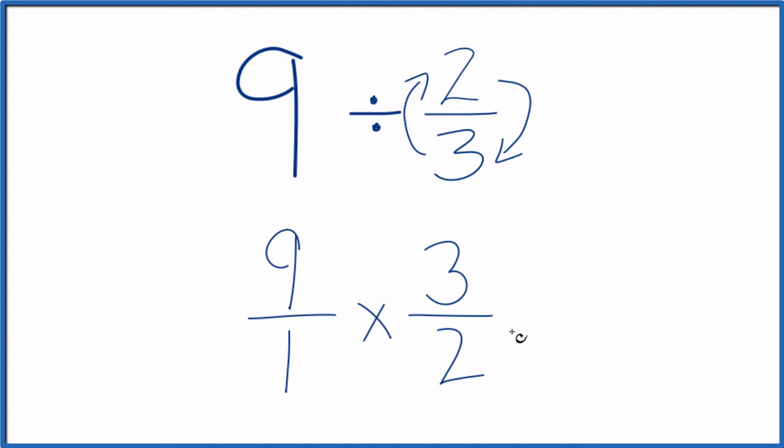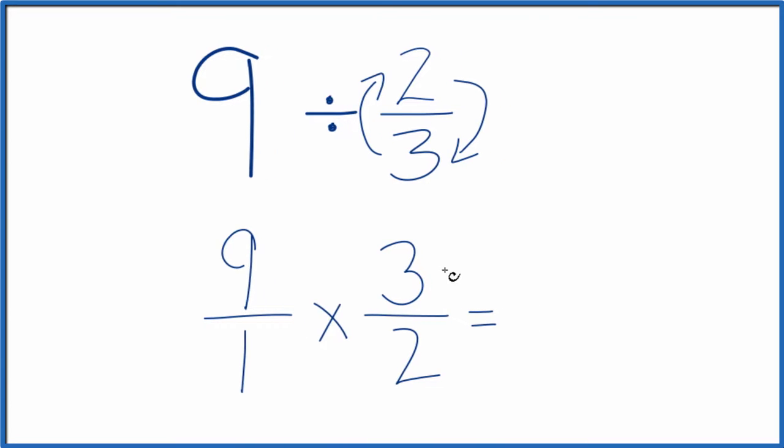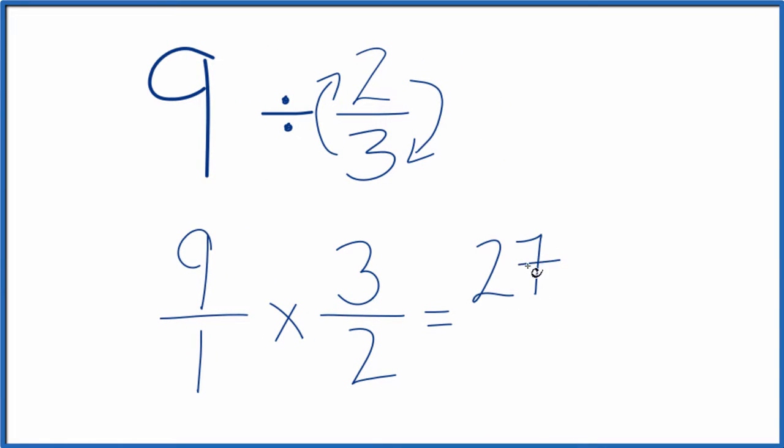Now we have fractions, and when you multiply fractions, you multiply the numerators and then the denominators. That'll give us our answer. 9 times 3 is 27. 1 times 2 is 2.